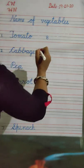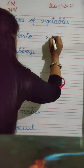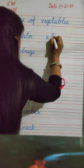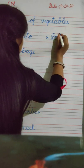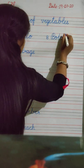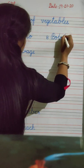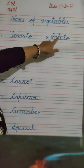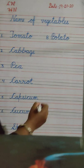Number 8 is P, O, T, A, T, O. Potato. Okay? P, O, T, A, T, O. Potato. Next.